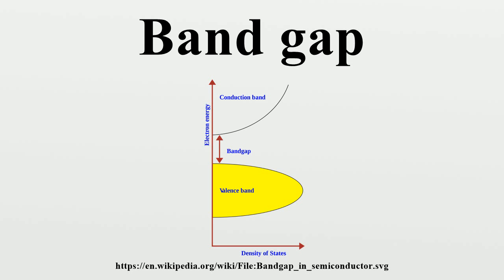Band gap engineering is the process of controlling or altering the band gap of a material by controlling the composition of certain semiconductor alloys, such as GaAs, InGaAs, and InAlAs. It is also possible to construct layered materials with alternating compositions by techniques like molecular beam epitaxy. These methods are exploited in the design of heterojunction bipolar transistors, laser diodes and solar cells.